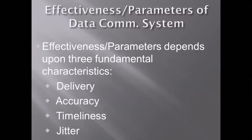The effectiveness parameters of a data communication system are: delivery, accuracy, timeliness, and jitter. Delivery means ensuring that your data is sent on time and reaches the correct destination. You send data from a source point, and if it successfully reaches the destination, the delivery is successful.